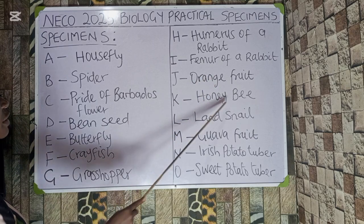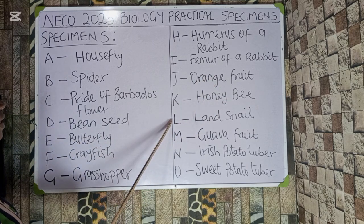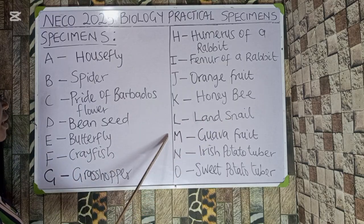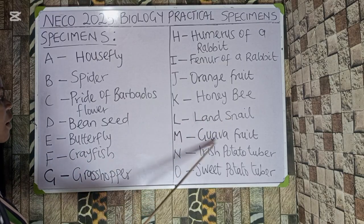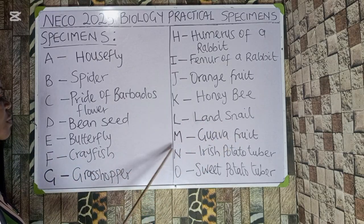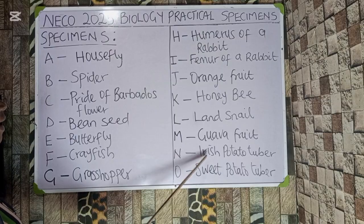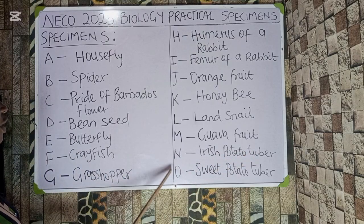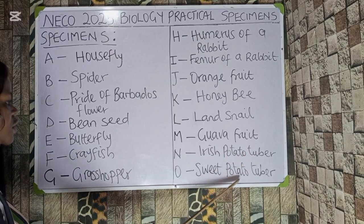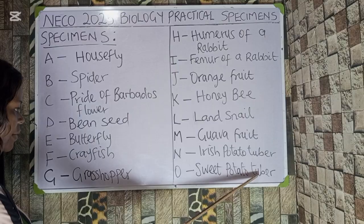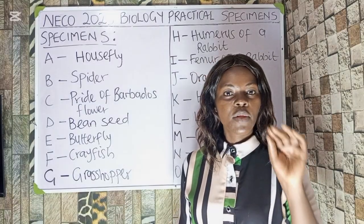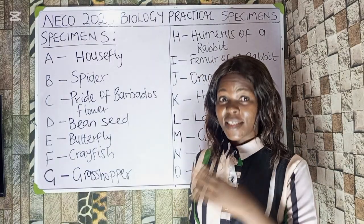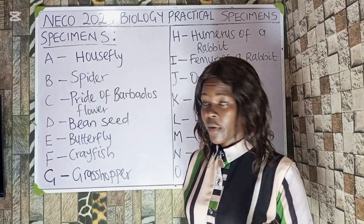Specimen H — humerus of a rabbit; Specimen I — femur of a rabbit; Specimen J — orange fruit; Specimen K — honeybee; Specimen L — land snail; Specimen M — guava fruit; Specimen N — Irish potato tuber; Specimen O — sweet potato tuber. Now I want to give you a small explanation on some of the specimens listed.